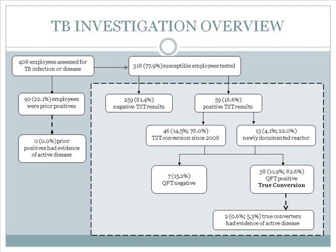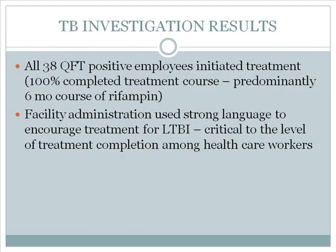Of the true converters, two facility staff members had evidence of TB disease with abnormal chest x-rays and symptoms of concern — persistent cough, rapid unexplained weight loss. TB was ruled out in one based on a primary care physician's diagnosis of sarcoidosis. The second facility staff member was both smear and culture negative and was treated for TB disease empirically based on the situation. Of the 38 QuantiFERON-positive employees, all were initiated on treatment, and 100% of them completed their treatment course, which was predominantly a six-month course of rifampin — preferred because it is a shorter course than the nine-month alternative. The 100% completion rate was unusual for healthcare workers, but the facility administration was quite adamant that their healthcare workers involved in this outbreak be treated adequately to avoid future active TB disease going undetected.